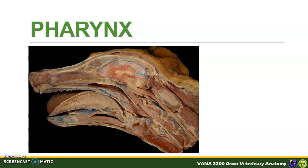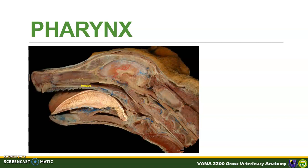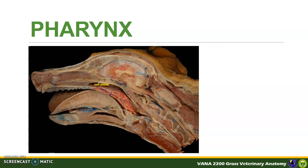Here is a sagittal section of the head to show the three major parts of the pharynx. For orientation purposes, let us first identify some of the landmarks that we can easily recognize. Here is the hard palate, and here is the soft palate. Here is the tongue. Let us again see the soft palate, as this structure serves as the boundary between the parts of the pharynx.